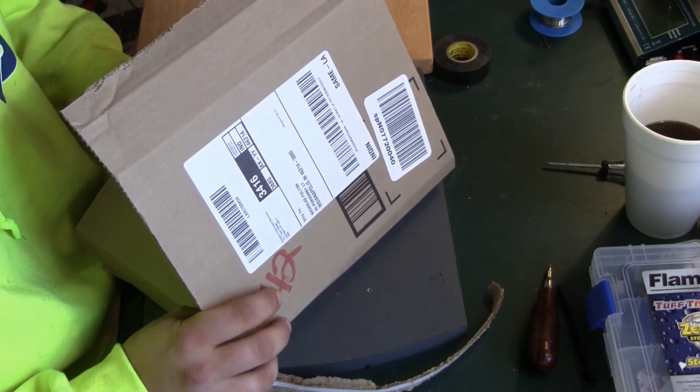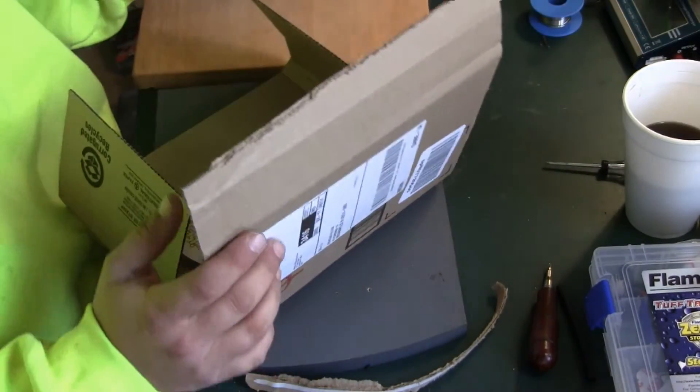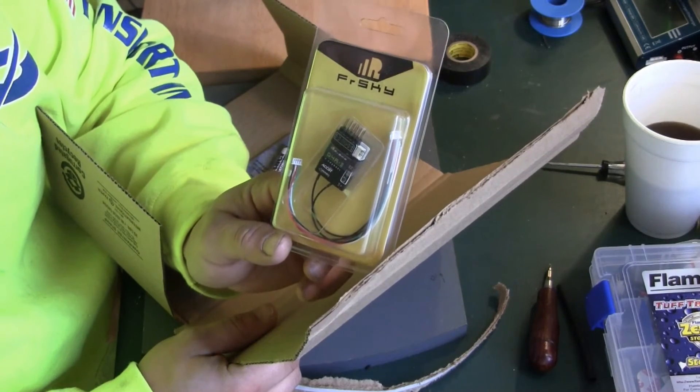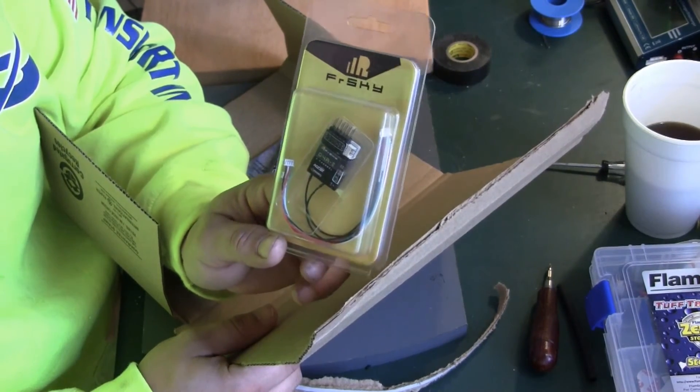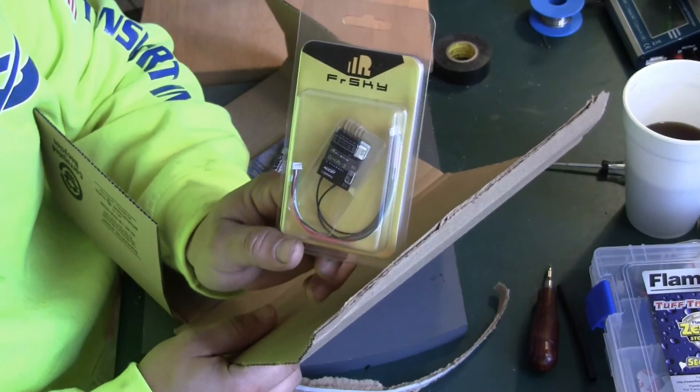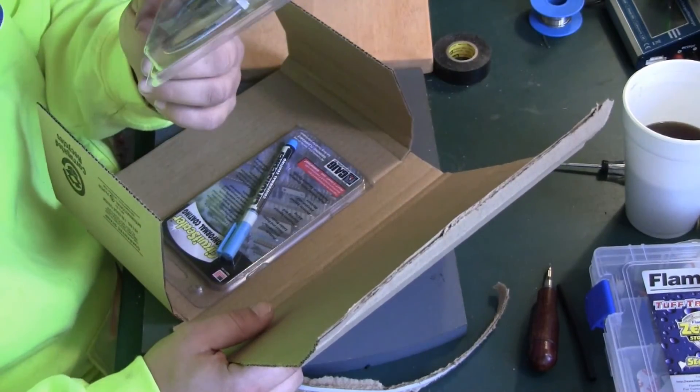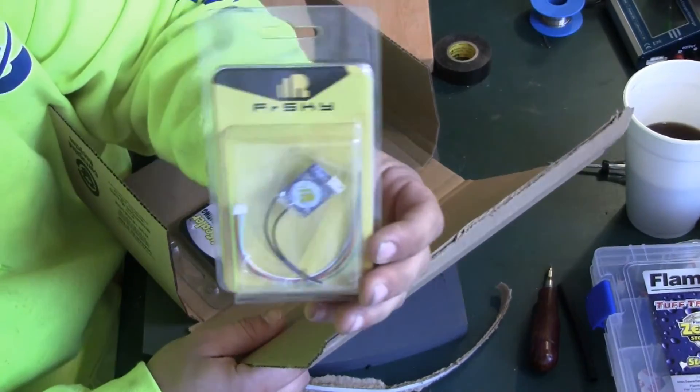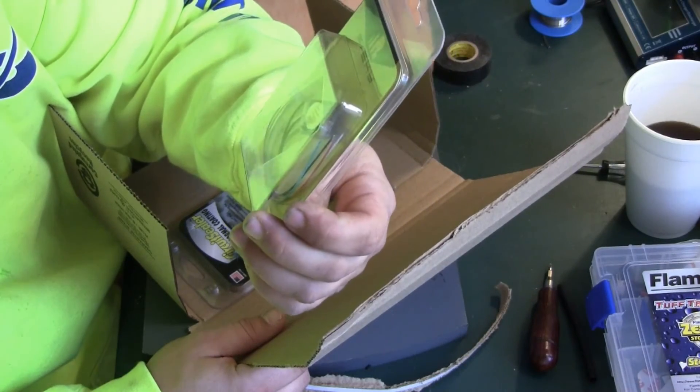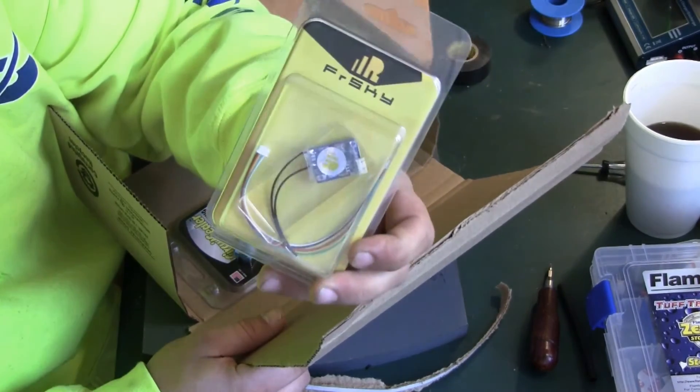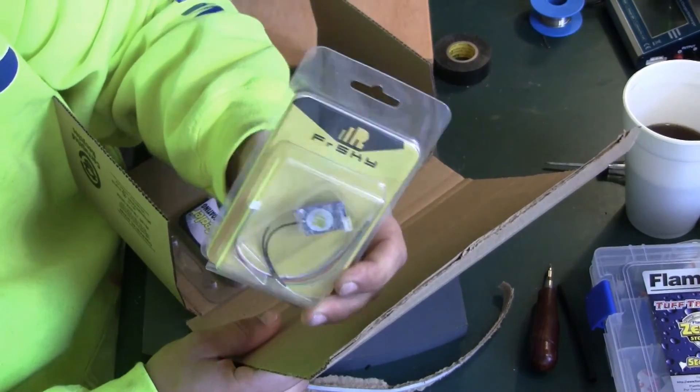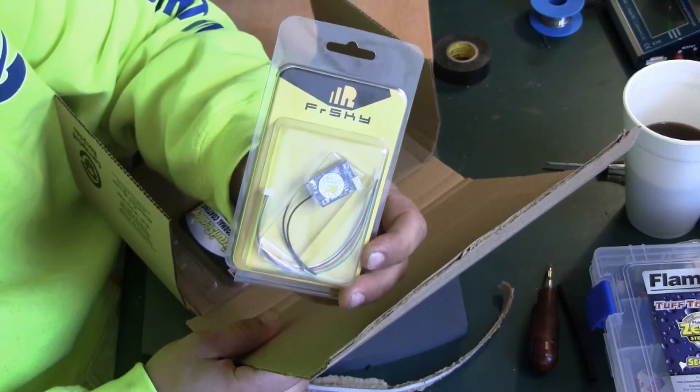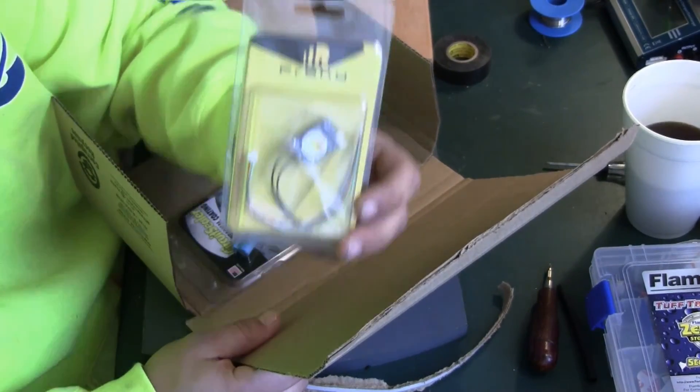You probably saw me unbox this earlier and I did not realize when I purchased this, this particular model does not do SBUS. So I will be returning this one and using the one that I've used before, the XSR, which is the smallest FrSky receiver that you can get. I mean there may be one that's a little smaller that's made by another company, but made by FrSky, the XSR with SBUS, that's the smallest one you can get.